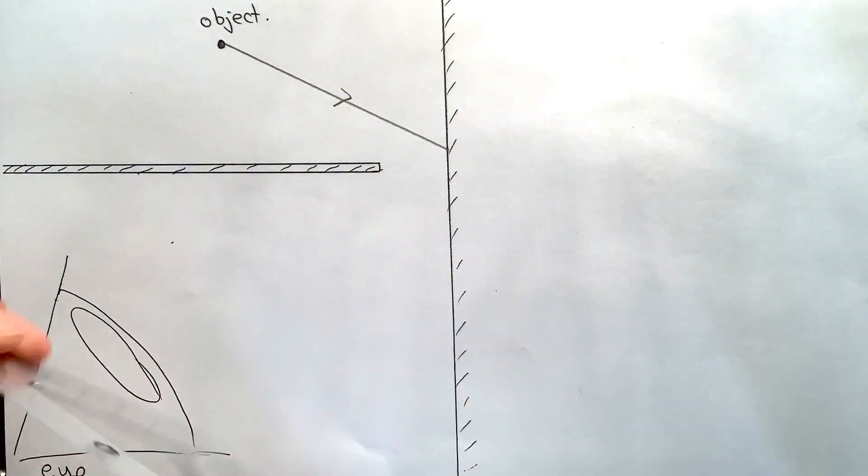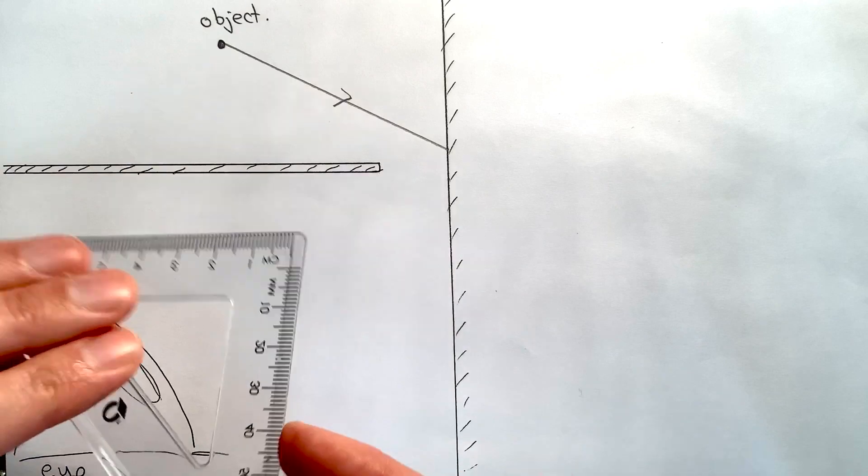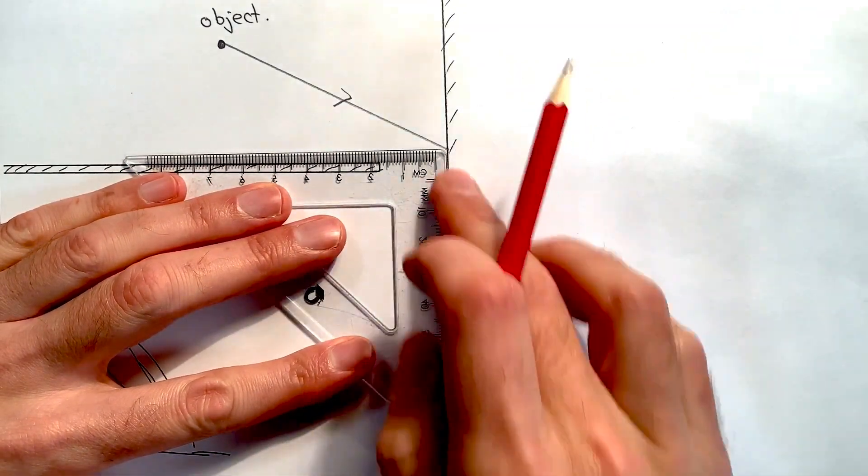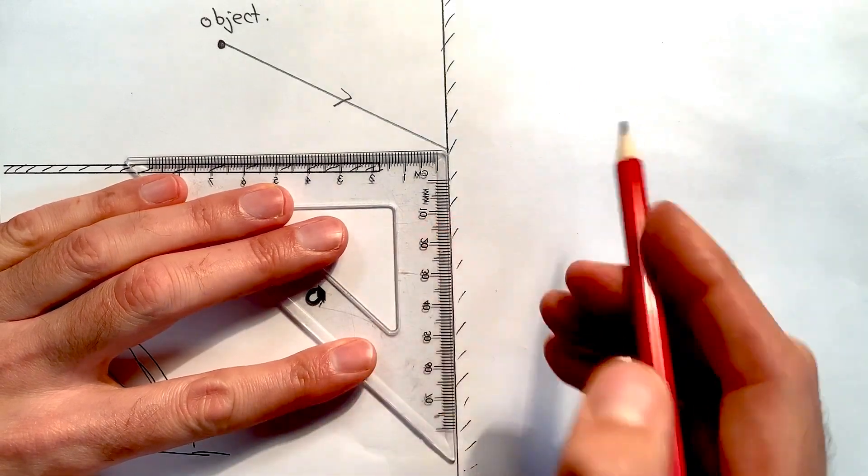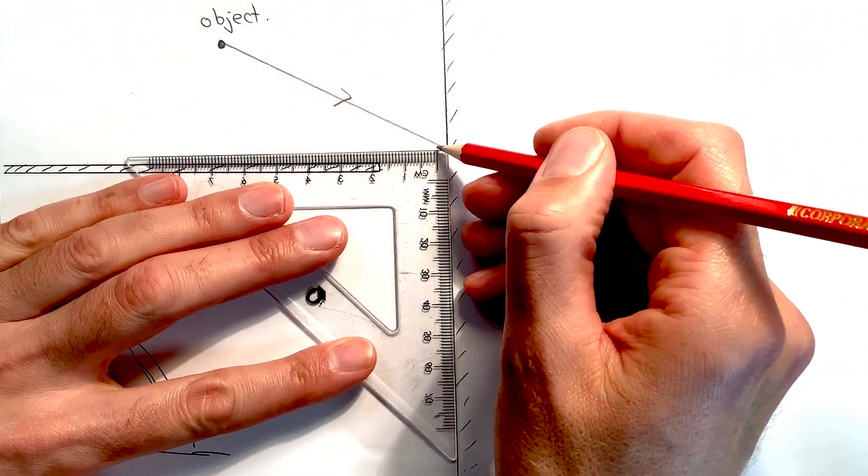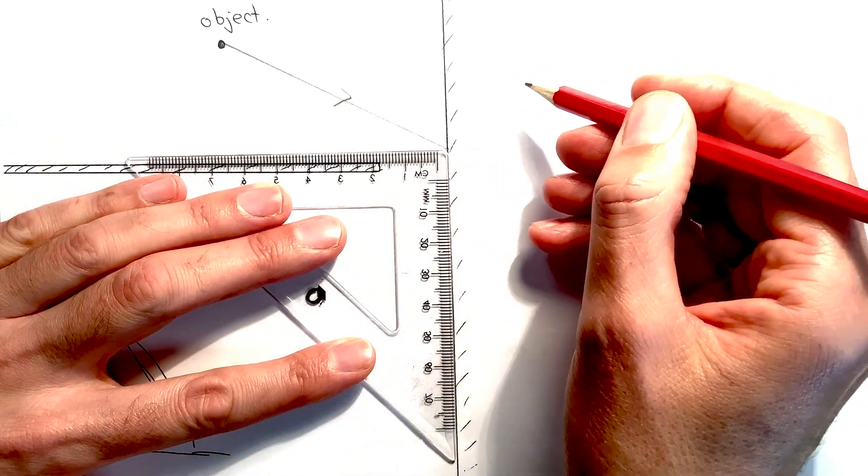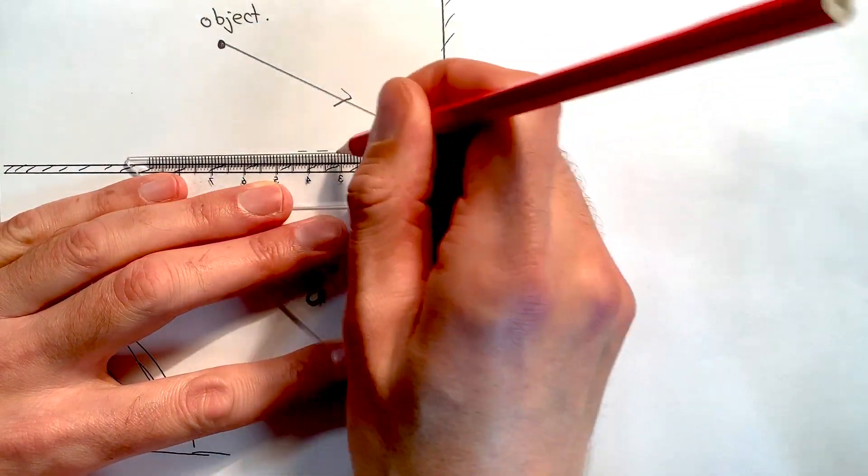So if I get my set square and place it on the paper so that this edge is lined up with here, and then move it so that it is lined up with where the incident ray hits the mirror, then I can draw in my normal.